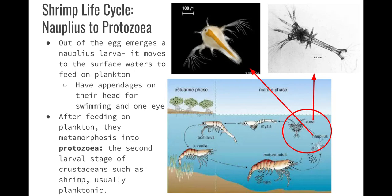Shrimp have multiple larval stages: nauplius to protozoa. The nauplius larva moves to the surface waters and feeds on plankton — it has appendages on its head for swimming and one eye. After feeding on plankton, they metamorphose into the protozoa, the second larval stage of crustaceans and shrimp — also planktonic. Being at the surface is good because there's oxygen and it's warm.